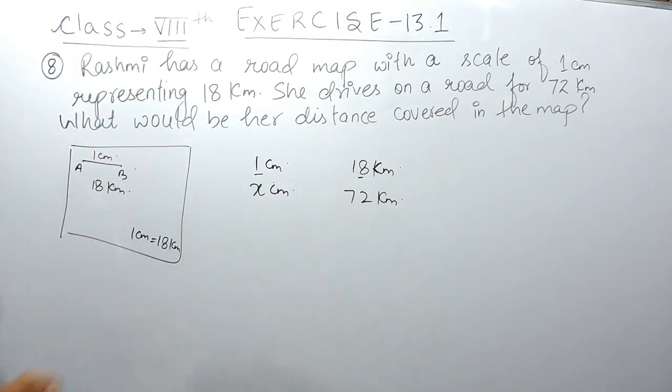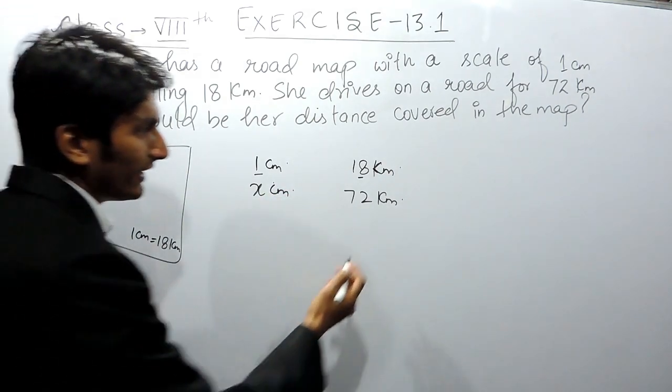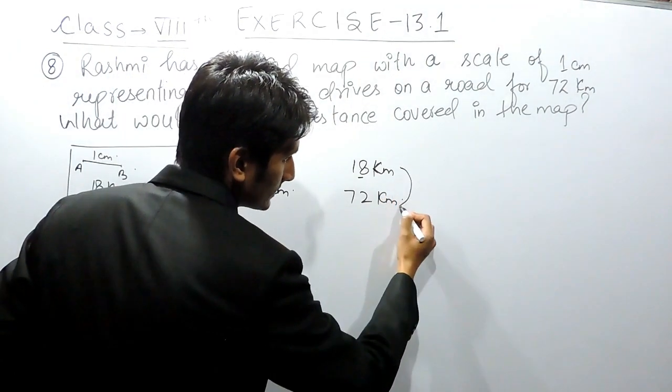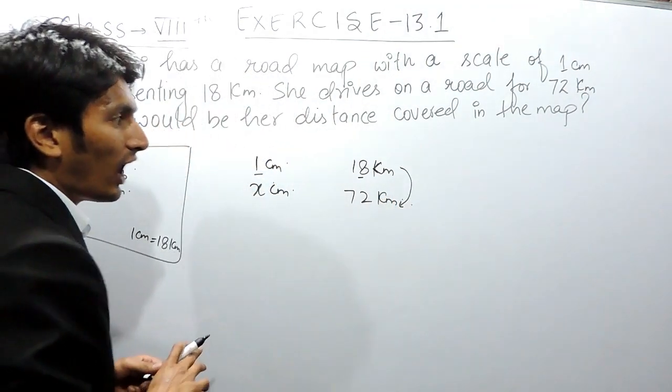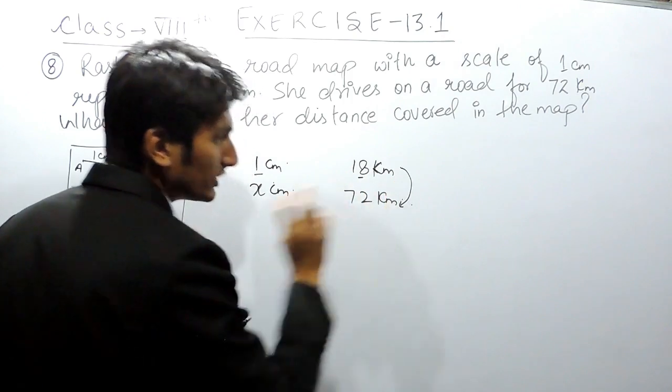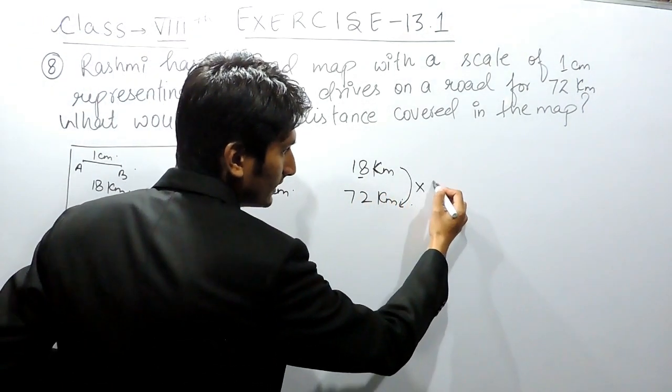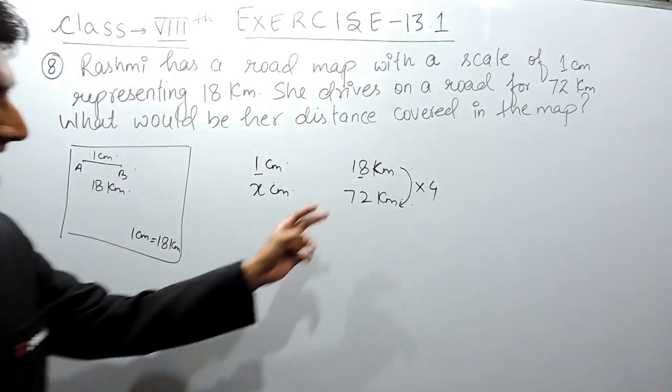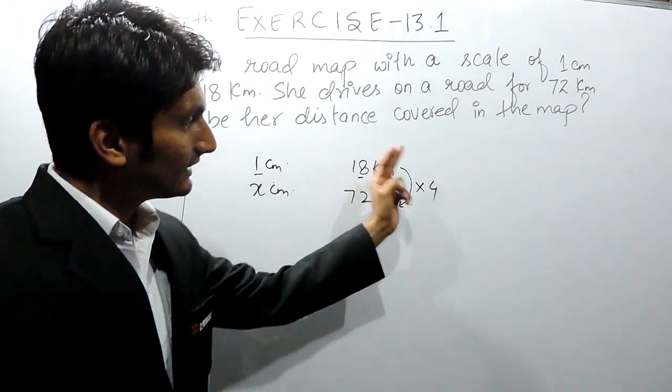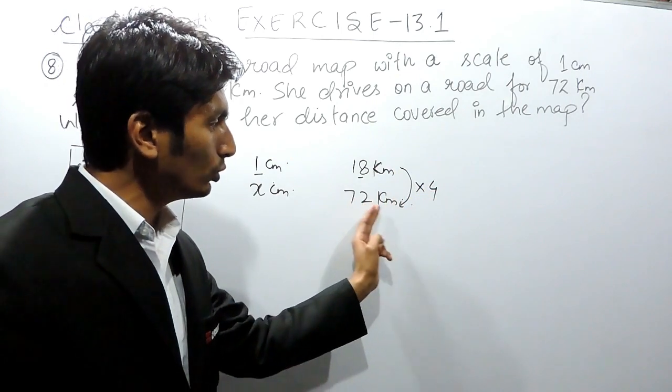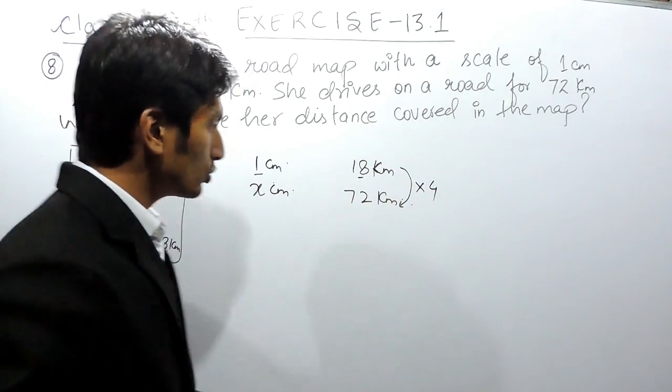Because this is direct proportion, one way of solving this is directly you find how many times this actual distance has increased. We can say that this has increased 4 times. So 18 kilometers, when increased 4 times, it is 72 kilometers.